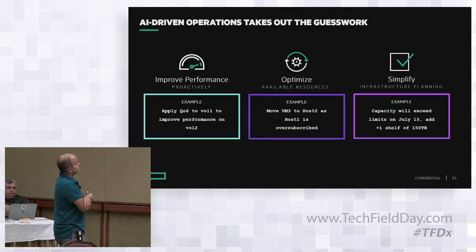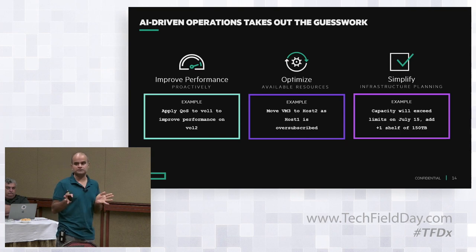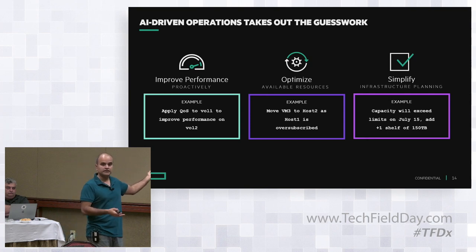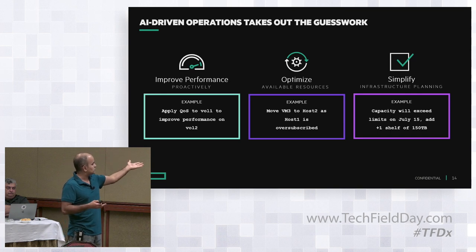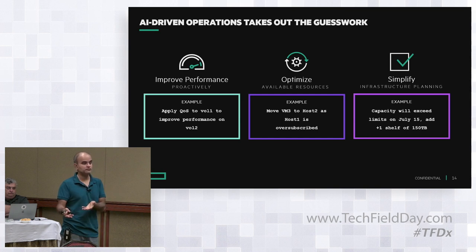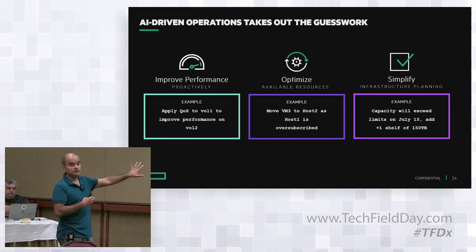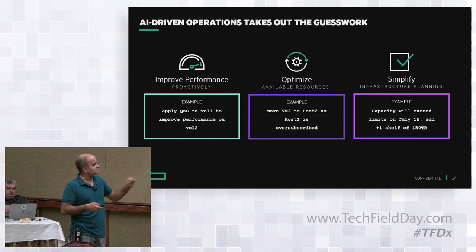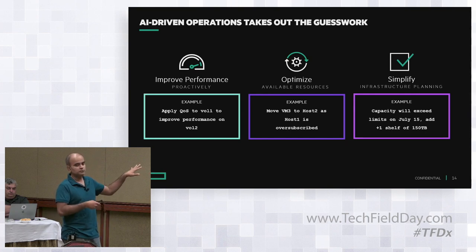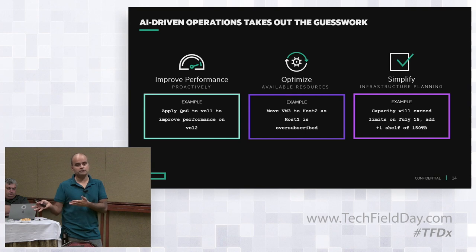Moving on to AI-driven operations — the central idea is to take the guesswork out of all kinds of operations. An example recommendation could be to apply QoS to volume one to improve performance in volume two. We may have hosts that are over- or under-subscribed on CPUs, with too many or too few vCPUs assigned, causing contention issues — we can capture that too. A third scenario is capacity limits, which is simpler — mostly straight-line fits, something a lot of competition also does, though it's not strictly machine learning.